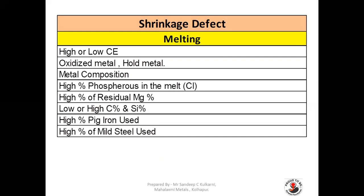In Melting: high or low carbon equivalent, oxidized metal, or holding of metal. Metal composition issues such as high percentage of phosphorus in cast iron melt, high percentage of residual magnesium in ductile iron, low or high percentage of carbon and silicon, high percentage of returns used in the charge mix, and high percentage of mild steel used in the charge mix can all cause shrinkage defects.